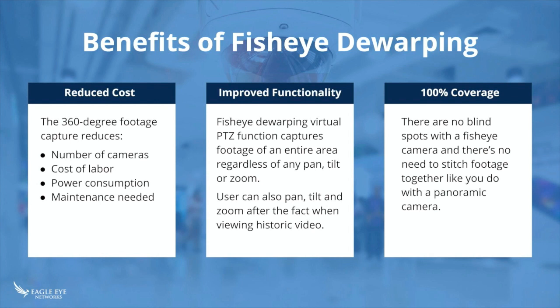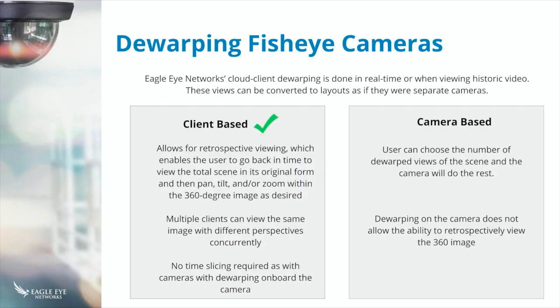What we're going to show you today is fisheye dewarping and virtual pan-tilt-zoom within that, so you can pan, tilt, and zoom anywhere within the image — live, using previews, or historically after the fact — in the Eagle Eye interface. Because of that, there's 100% coverage. With a traditional PTZ camera, if you pan off to the right, it's not recording what's on the left side. Not so any longer with fisheye dewarping.